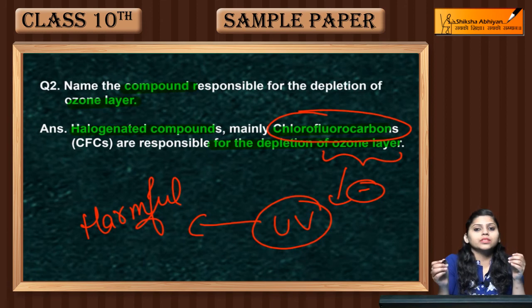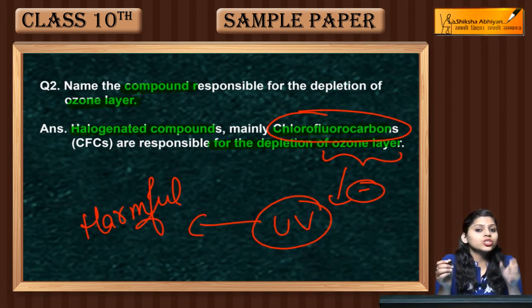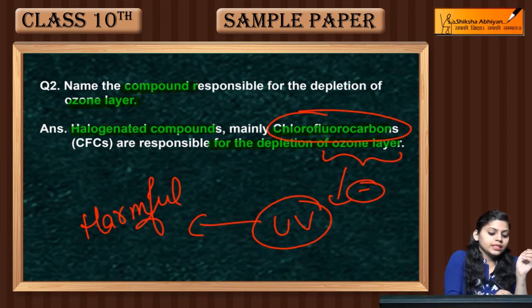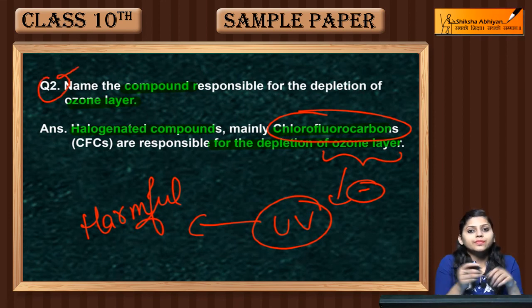Chlorofluorocarbons — halogenated compounds — are responsible for the depletion of the ozone layer. This is the answer to question number 2.